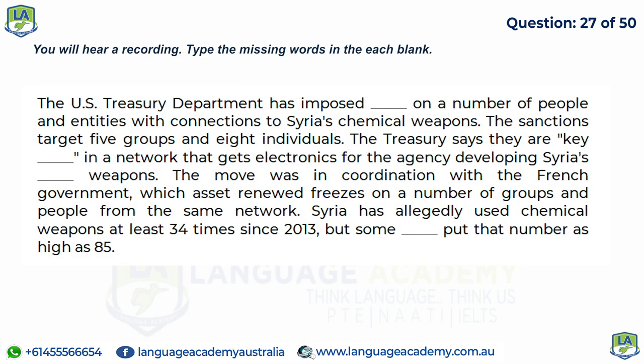The U.S. Treasury Department has imposed sanctions on a number of people and entities with connections to Syria's chemical weapons program. The sanctions target five groups and eight individuals who are key components in a network that obtains electronics for the agency developing Syria's chemical weapons. The move was coordinated with the French government, which also imposed asset freezes on members of the same network. Syria has allegedly used chemical weapons at least 34 times since 2013, with some estimates as high as 85.